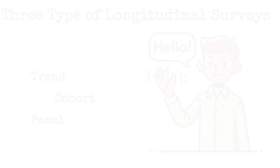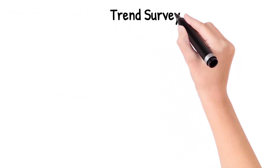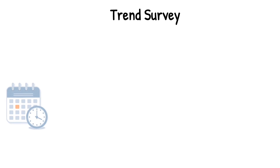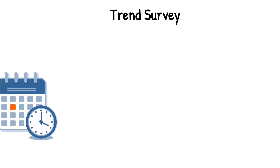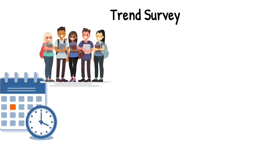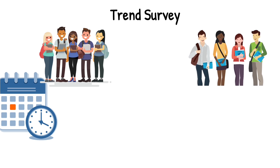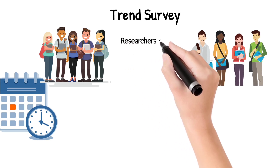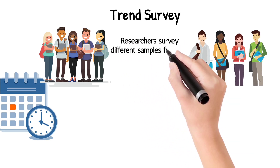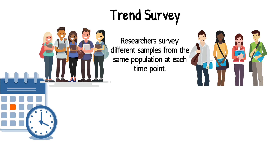First, let's talk about trend surveys. In a trend survey, researchers look at how something changes over time, but they don't follow the same people. Instead, they survey a different sample of people from the same population at different points in time.